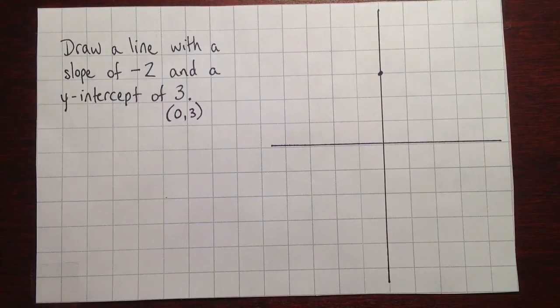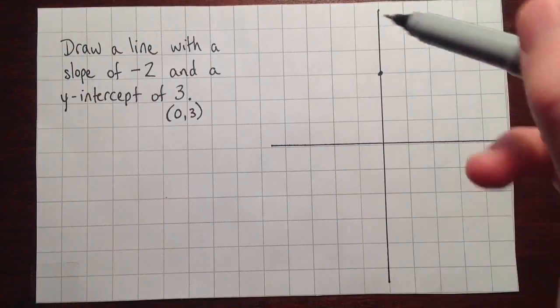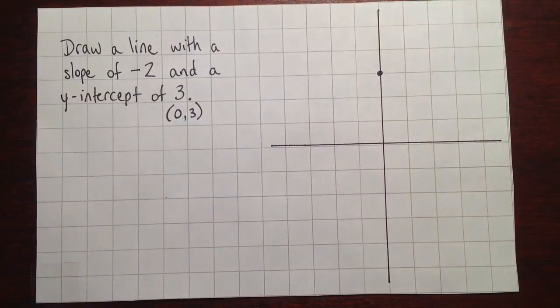Okay, so if you want to draw this line, the first thing to do is to start with the point that you know. You can't really draw a line with a certain slope until you have one point from it.